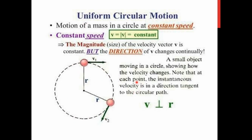So uniform circular motion is motion performed by a body in a circular path with constant speed. A practical example is the tip of a ceiling fan — the tip of that fan undergoes uniform circular motion at a certain constant speed.